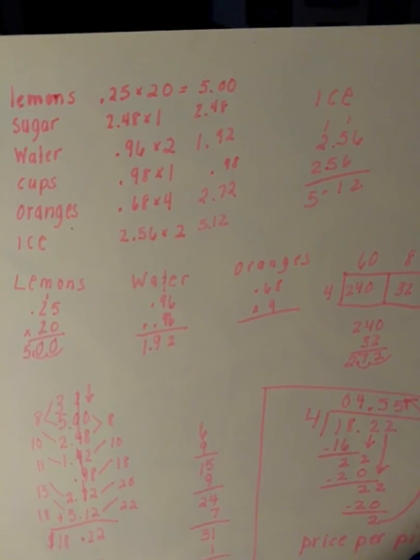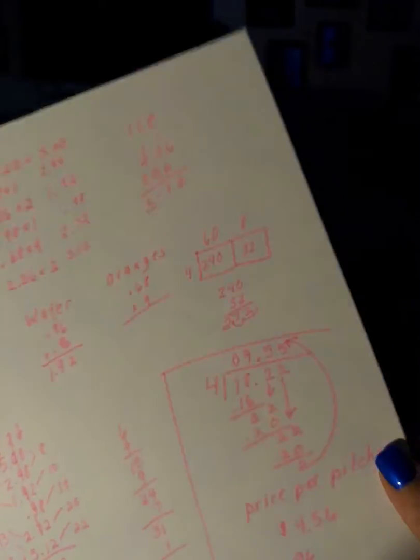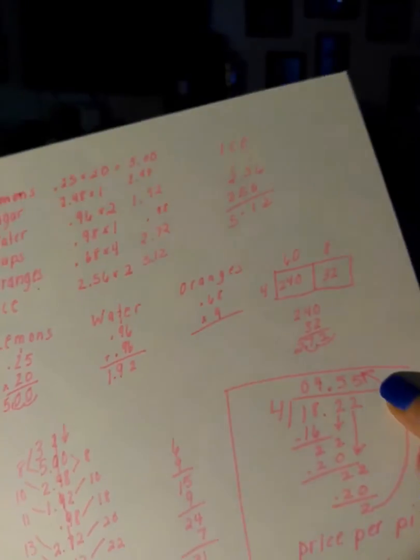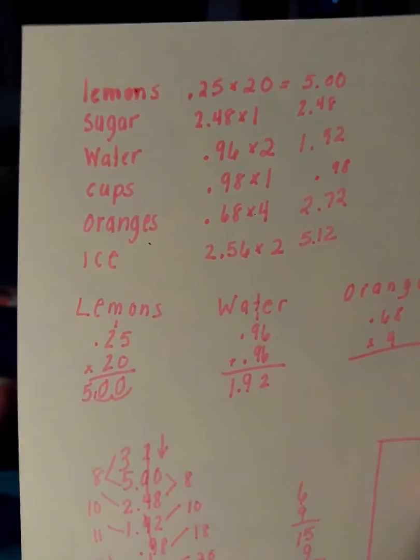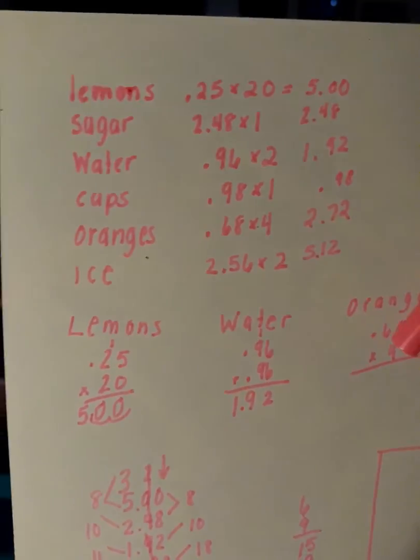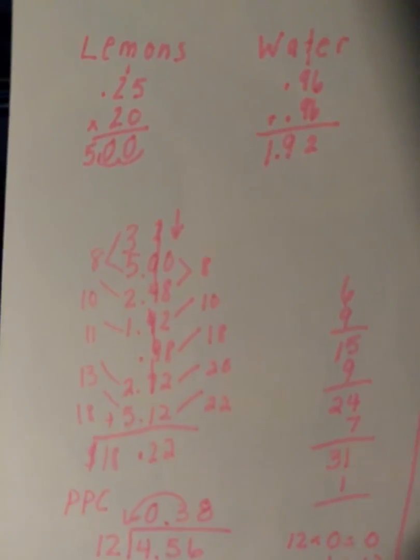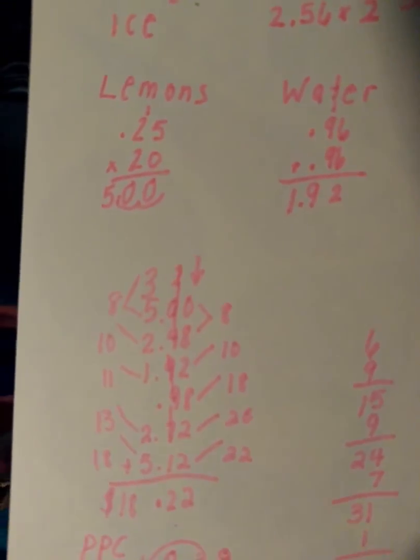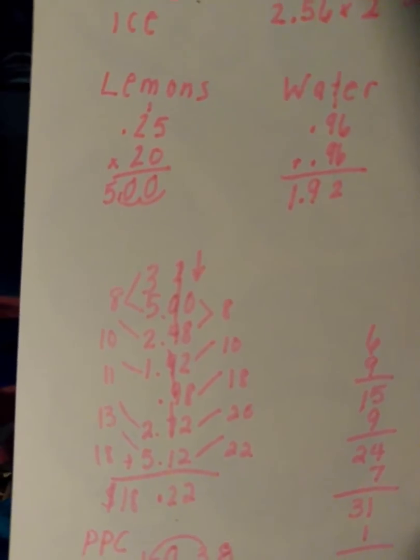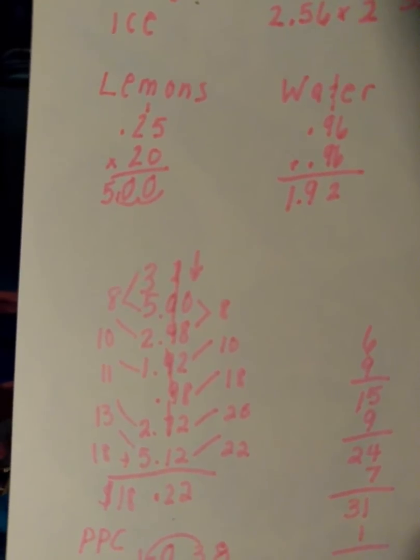And once I had all that information for each one of my products, the price itself, I then could move on to adding everything together. Once I added everything together, that gave me my price per 4 pitchers. So $18.22.